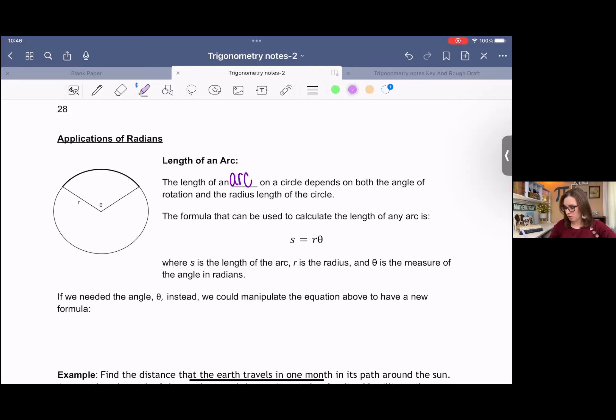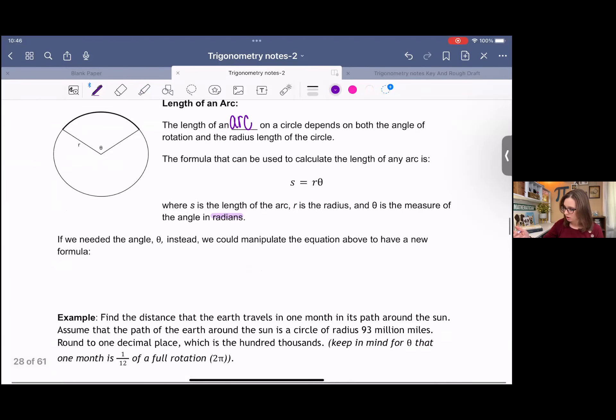So that's important. If you're given degrees, make sure you convert to radians for this problem. If we manipulate that equation and we need theta instead, we can divide both sides by r and we get theta equals s over r. If you needed r instead, you divide both sides by theta. So you can play with this equation to come up with other equations.